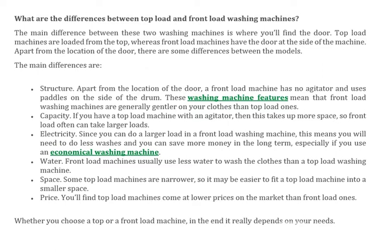The main difference between these two washing machines is where you will find the door. Top load machines are loaded from the top, whereas front load machines have the door at the side of the machine. Apart from the location of the door, there are some differences between the models. The main structural difference is the door location.